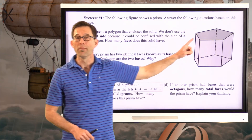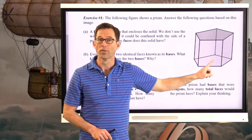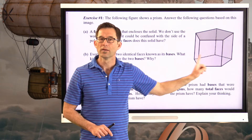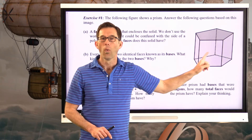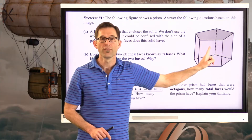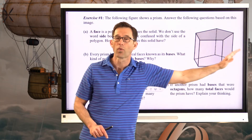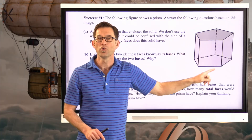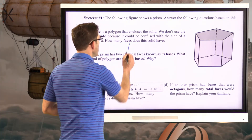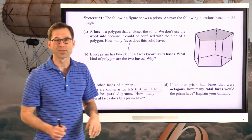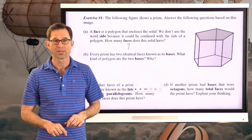I've got my base up here and my base down here — that's two. Then the faces that go around the figure: one, two, three, four, five of them. So I've got the five lateral faces plus the two bases — a total of seven faces. Simple enough as long as you know what a face is.